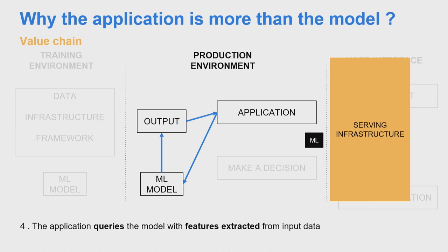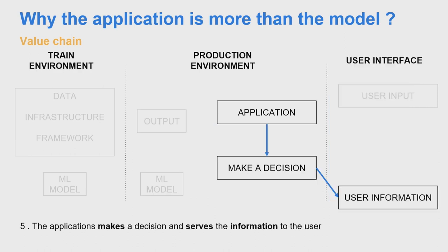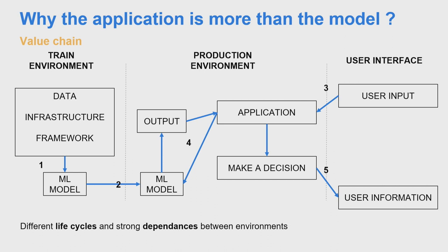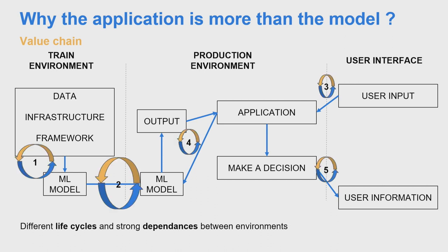Once you have the probability output, that's not the end, because you're not going to serve a raw probability — you don't know what to do with it. The application needs to make a decision. If there's a 60% chance it's a car, say it's a car. If there's a 30% chance, say it's not. And in between, say: I don't know, make another drawing. You need to serve this information to the user. All five different steps are part of the value chain, and this huge portion on the right-hand side has nothing to do with machine learning. These steps have different life cycles but are all part of the value chain, so you need to combine them the right way and automate them with code — not only machine learning code.